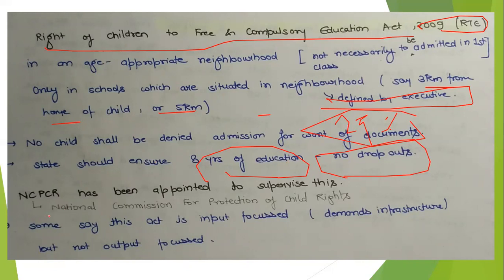The government established the National Commission for Protection of Child Rights as a watchdog to monitor and ensure effective implementation of the Right to Education Act. A criticism of the Act is that it is very much input-focused with low output — it is about the right to schooling but not really the right to education, with focus on enrollment but not learning quality. This completes Article 21A.